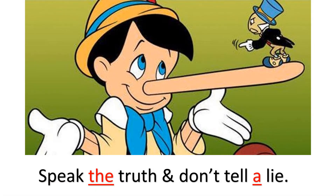'Speak the truth and don't tell a lie.' 'The' is used before 'truth' because it is an abstract noun. 'A' is used before 'lie' because 'lie' is here a singular noun.